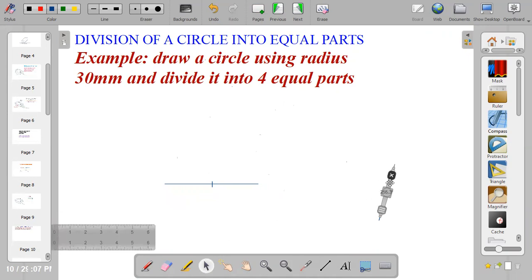Then you bring that to your compass. Center at the midpoint, using the radius of the circle, radius 30mm. So you draw a circle.